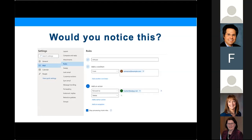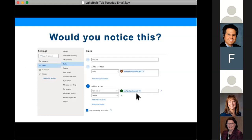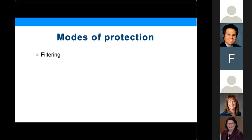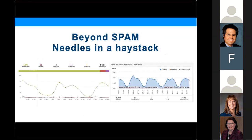If you're ever compromised, you want to make sure you scan your configurations that nothing has been changed where these rules might have been set. That's one thing to be careful of. The first protection is filtering — everyone is aware of spam filtering. There are standalone spam filters and filters built into some email systems. Finding the malicious content inside your email is like finding needles in a haystack.